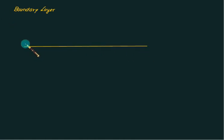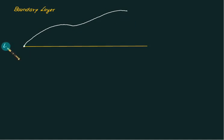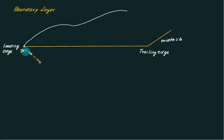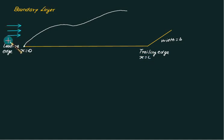We have a flat plate here and a formation of boundary layer which consists of laminar and then turbulent regions. Where the boundary layer starts is called the leading edge, and the other end is called the trailing edge. The width is b. At the leading edge we have x equal to 0, at the trailing edge x equal to L, and we have uniform upstream flow of u-infinity. Because of the viscosity of the fluid, the velocity near the wall is zero.